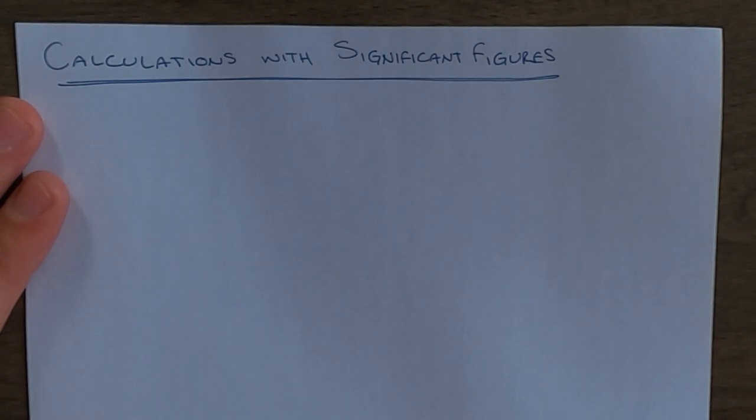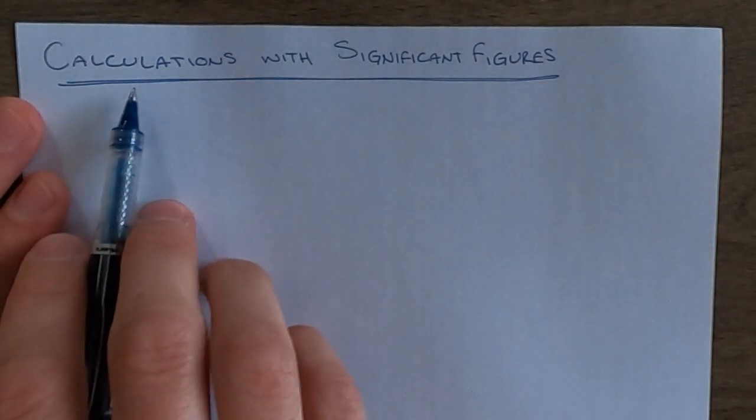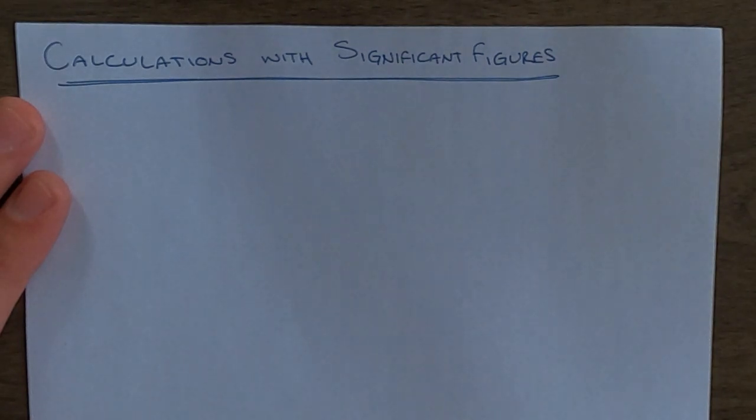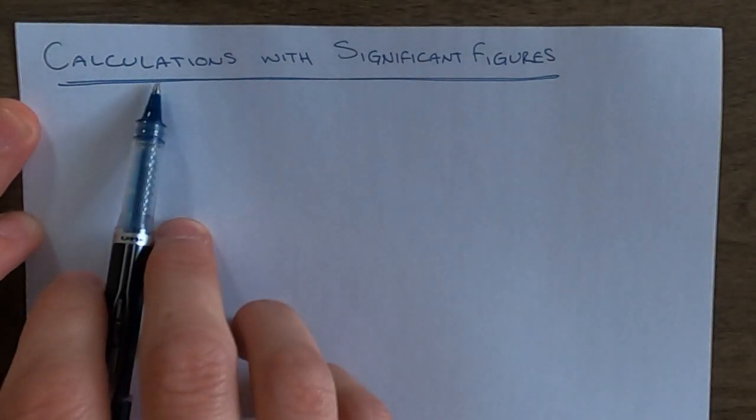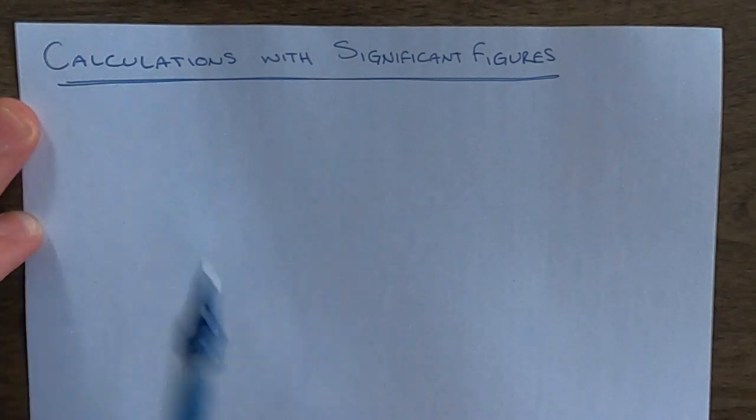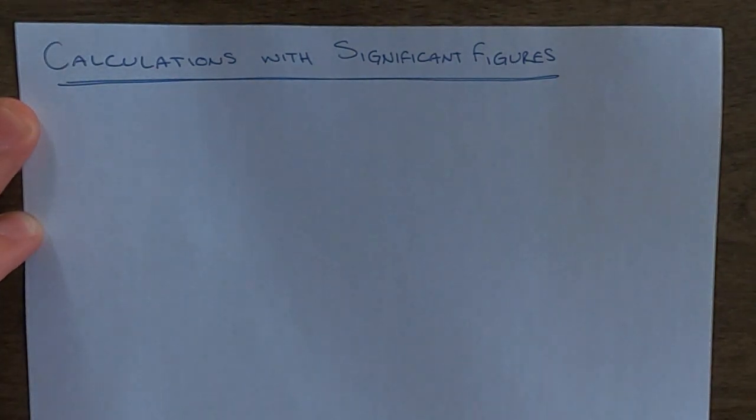So it goes to reason that if you're going to do calculations that involve those measurements, those also need to be reported with an honest amount of precision and detail. The main idea is that any calculation that you do on measurements cannot have an answer that is more precise than the measurements that went into them.